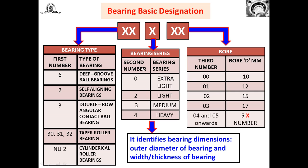The second digit indicates the bearing series: 0 is extra light, 2 is light series, 3 is medium series, and 4 is heavy duty series. As the series number increases from extra light to heavy duty, the bearing outer diameter, width, and size are going to increase, and the cost of the bearing also increases accordingly.